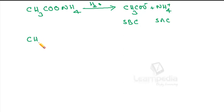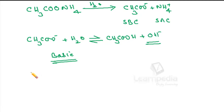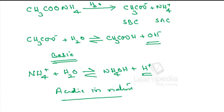If anionic hydrolysis takes place, CH₃COO⁻ reacts with water to give acetic acid CH₃COOH and OH⁻. These OH⁻ ions are responsible for the solution being basic in nature, so anionic hydrolysis results in basic nature. But in addition to this, the cation NH₄⁺ can also undergo hydrolysis to give ammonium hydroxide, the weak base, and H⁺. These H⁺ ions are responsible for the solution being acidic. Therefore whether the aqueous solution is acidic or basic depends upon the relative strengths of the acetate ion and ammonium ion.